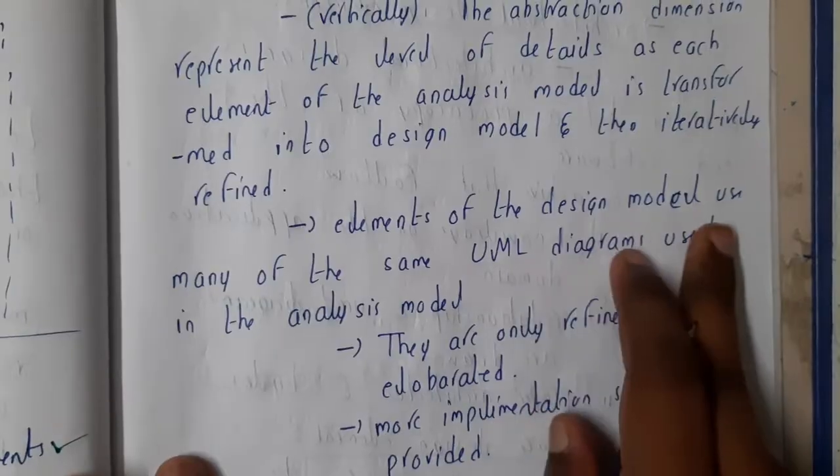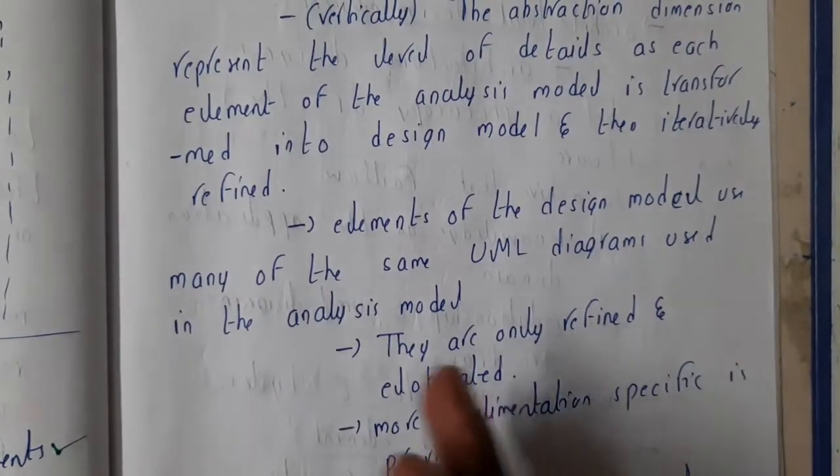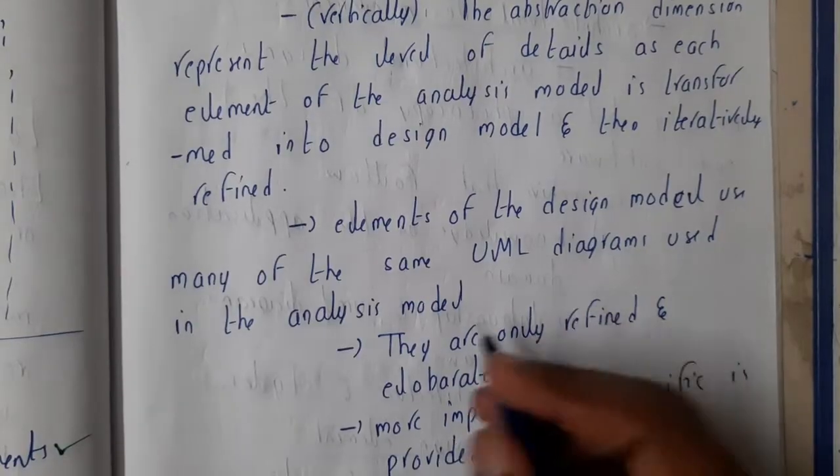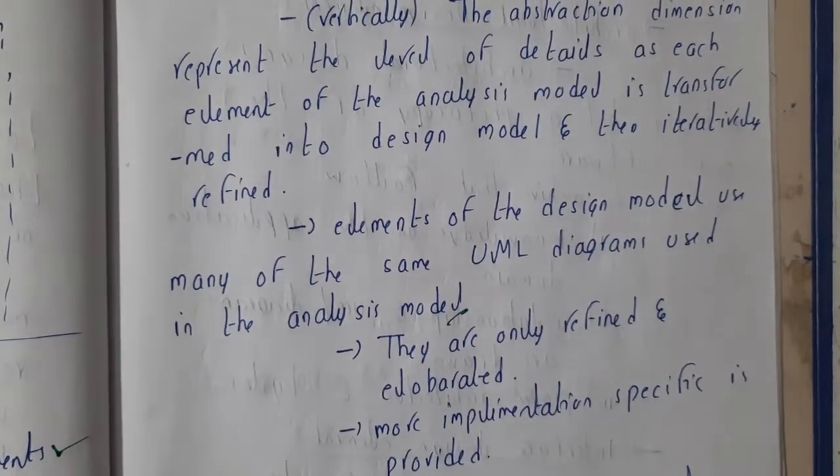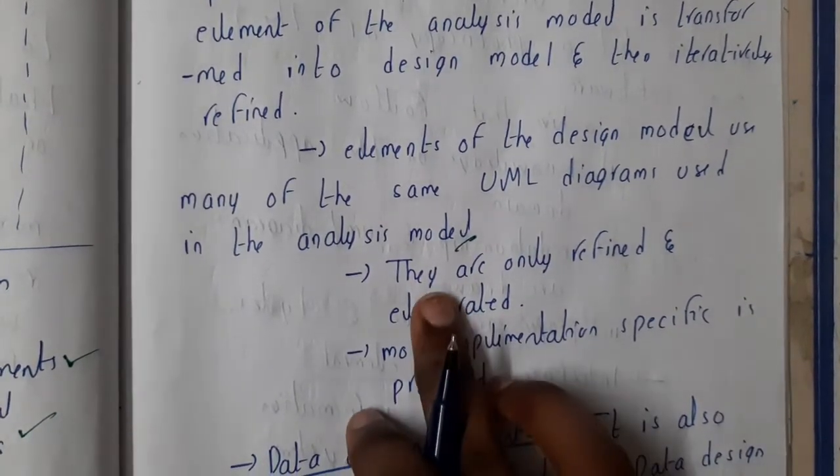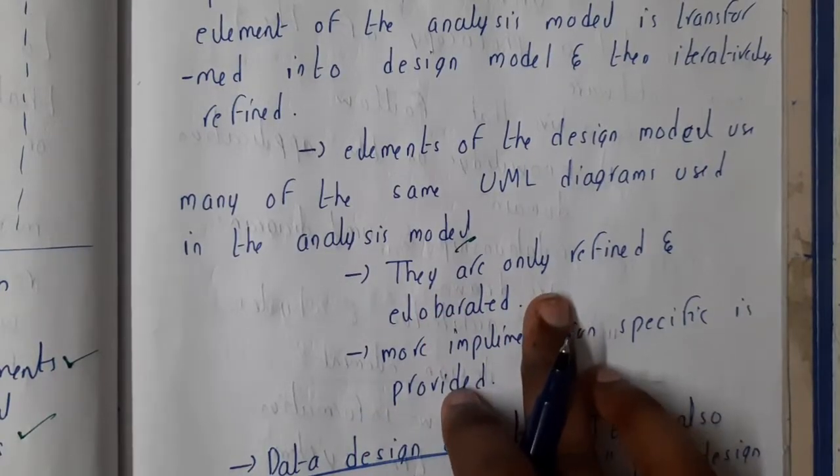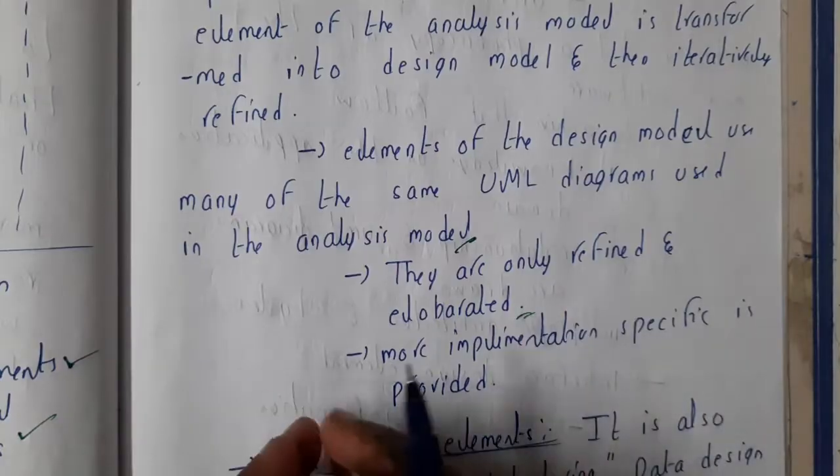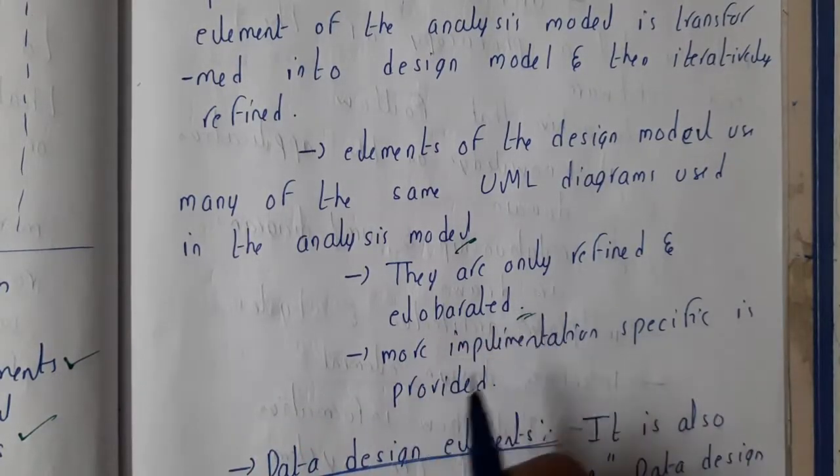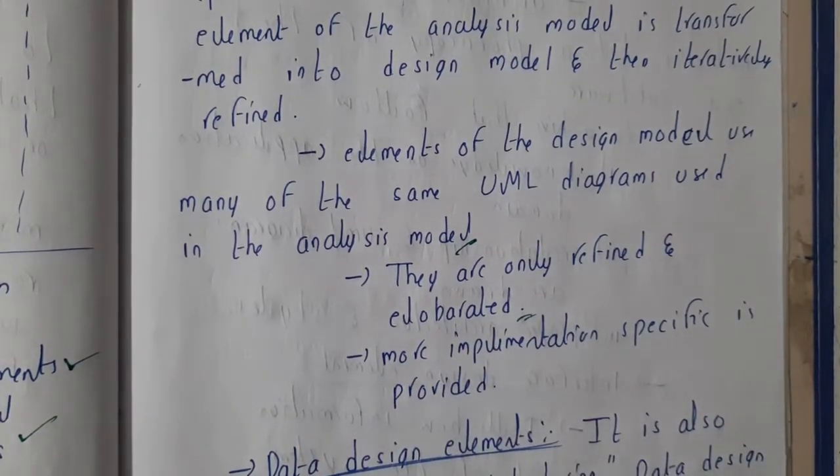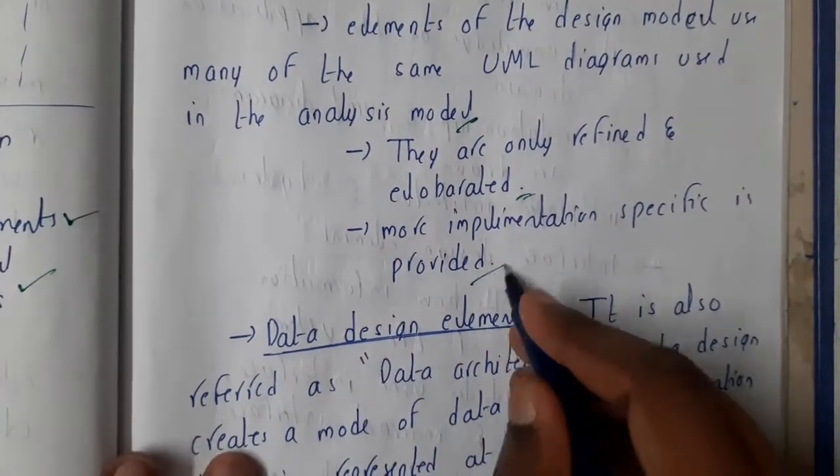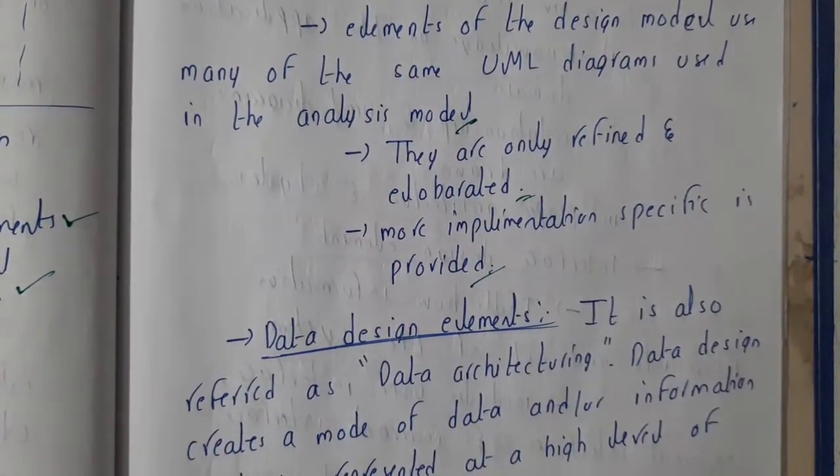Elements of the design model use many of the same UML diagrams which we already used or discussed in analysis model. They are only refined and elaborated. In design model you will be elaborating them a bit more and explaining them in detail. More implementation specific details are provided.